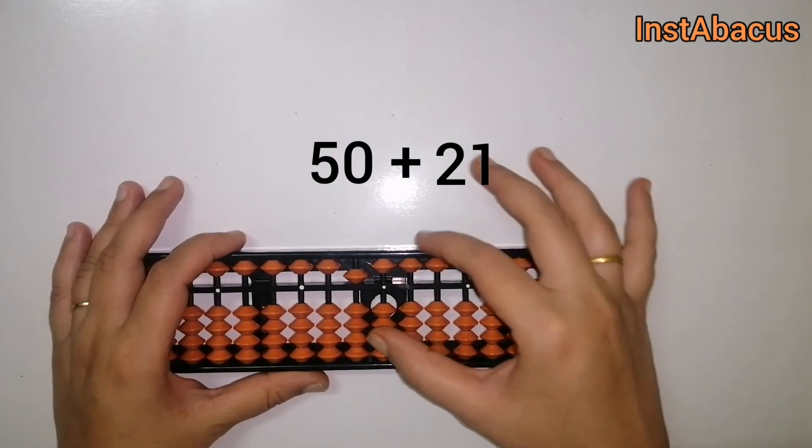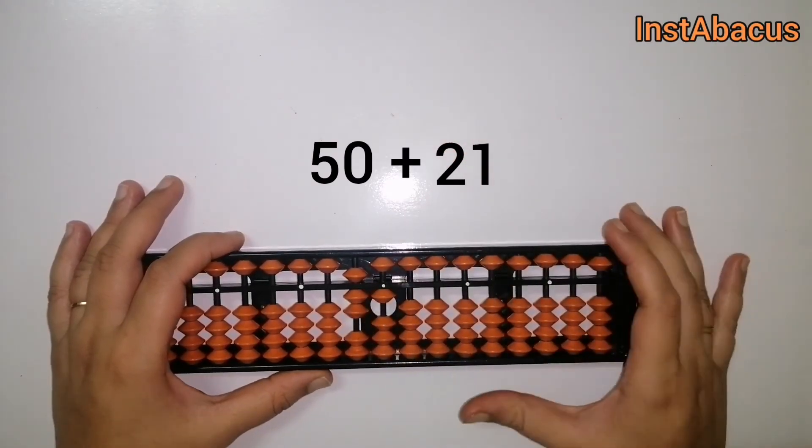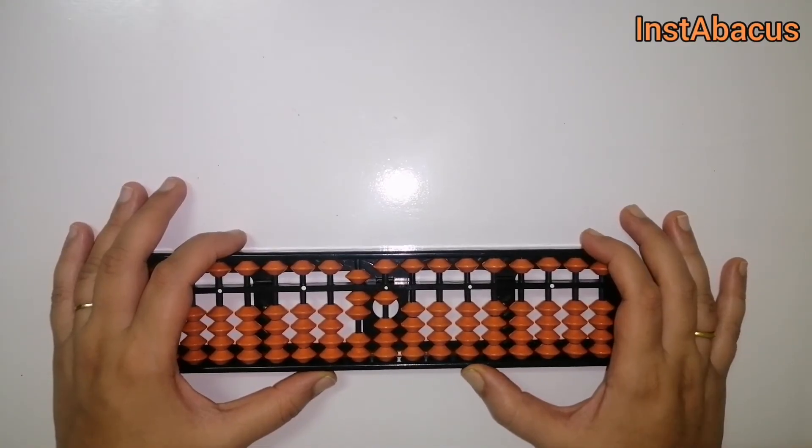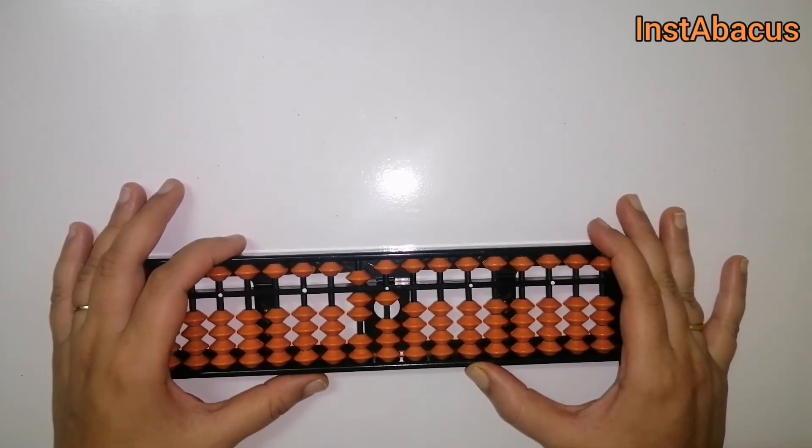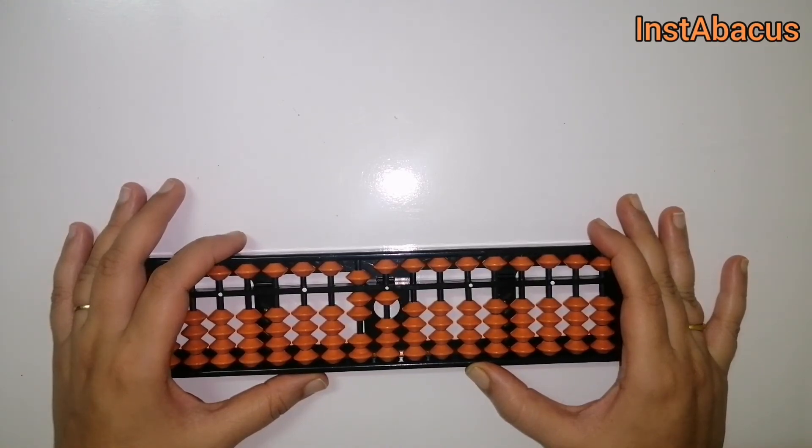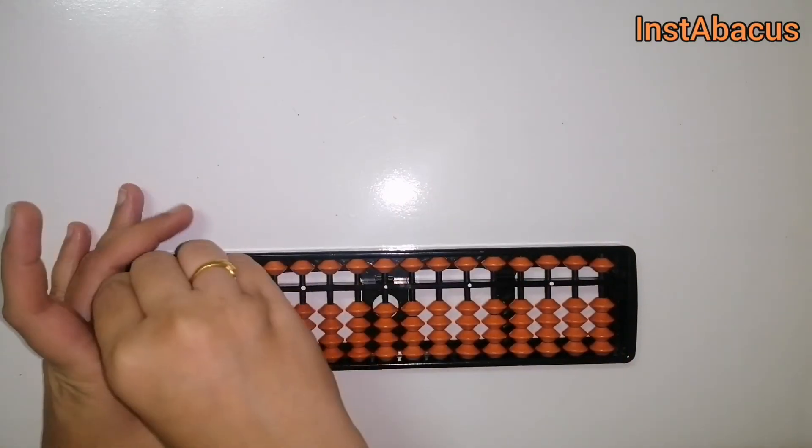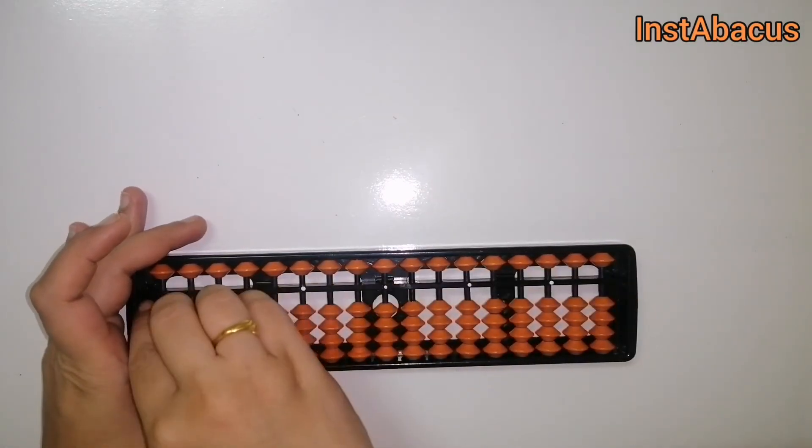All right, 2 and 1, 21. Super easy, isn't it? 50 plus 21, that is 71. That's correct. All right, you are becoming expert now.